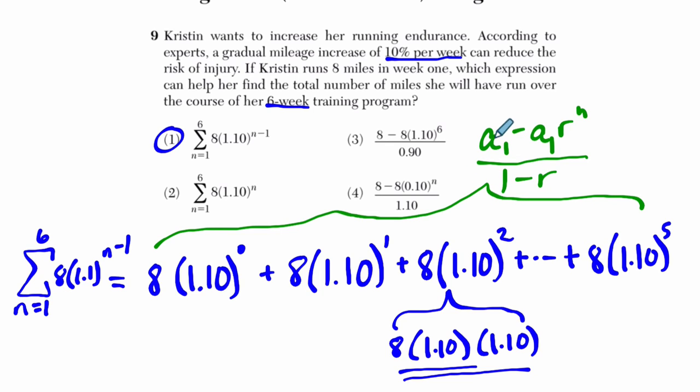a sub 1 minus a sub 1 times r to the n over 1 minus r. That's just a fancy way of saying, take your first term, a sub 1, subtract, in this case, 8. So you have 8 minus 8 times the rate between each term, 1.1 to the nth, not the nth minus 1, but the nth, that's 6, over 1 minus r. Now, this would have been correct.